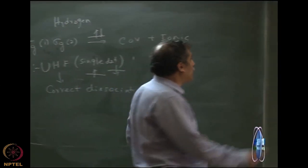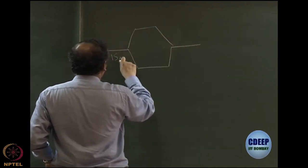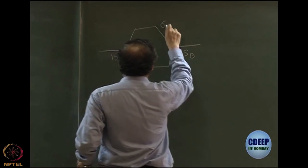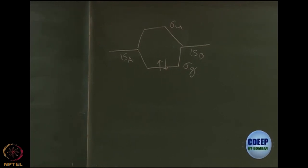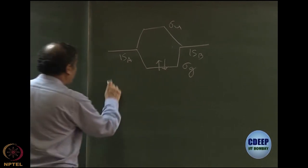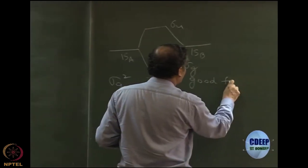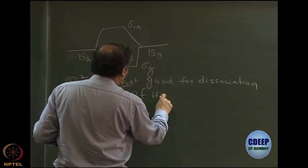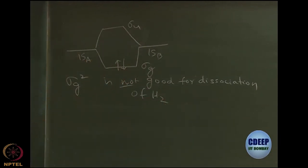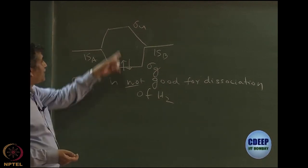A better way is the following. Going back to the two-state problem: you have 1S_A and 1S_B, sigma_G and sigma_U. The normal RHF has two electrons stuck in sigma_G. This determinant, which we call sigma_G squared, is not good for dissociation of H2 or any molecule which breaks into open plus open — but it is a singlet state. So can we keep the wave function as a singlet and yet dissociate correctly?